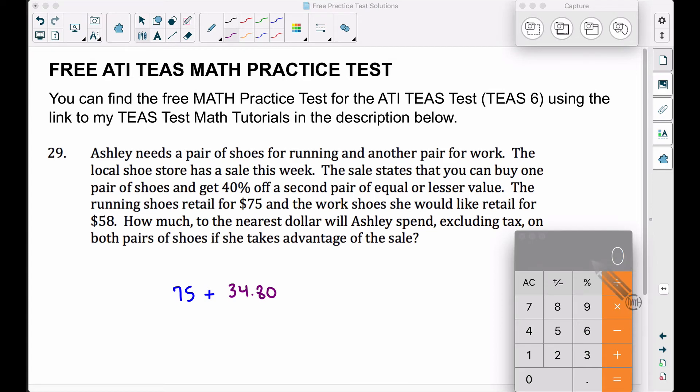However, before we finish this problem, there's a faster way to get the $34.80. If she's getting 40% off the second pair of shoes, the cheaper pair of shoes, that's going to leave her paying the remaining 60%. If you get 40% off,